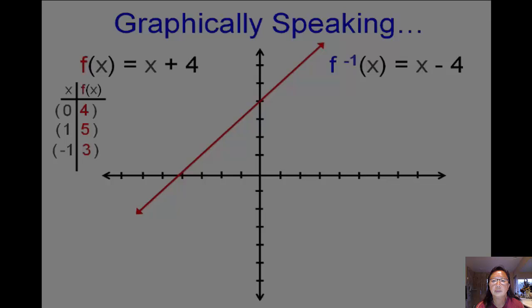Now, if I do the inverse function, try the same three points: zero, one, and negative one, and I get zero, negative four; one, negative three; and negative one, negative five. And if I graph those, they also line up and the inverse function in blue there graphs right there.